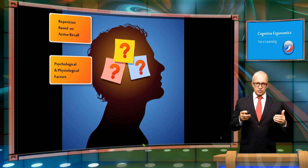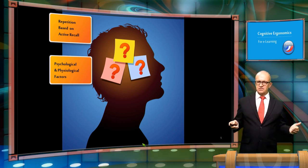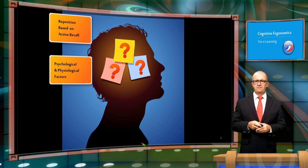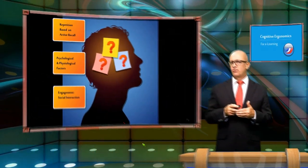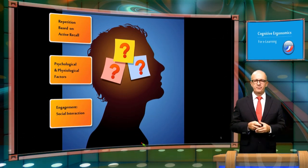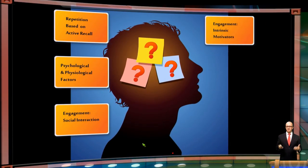You can also work on psychological and physiological factors like sleep and stress. Another way is to enhance learners' engagement through social interaction. Working on intrinsic motivators like mastery, autonomy, and purpose of learning are also very good ways to improve learners' engagement.